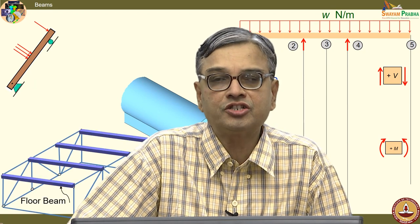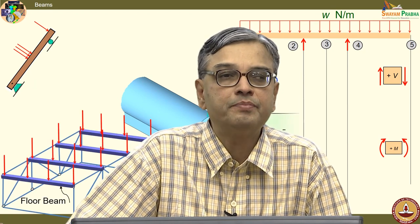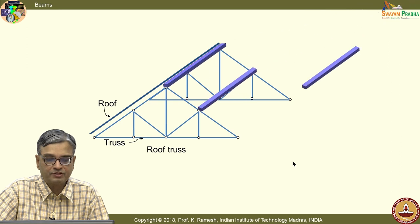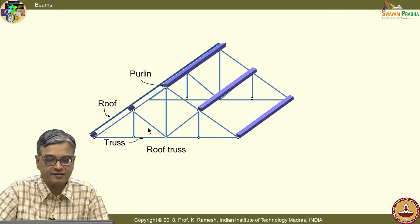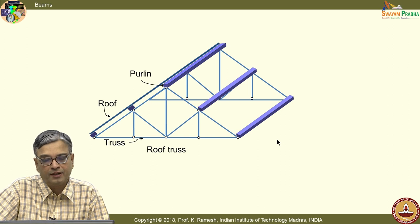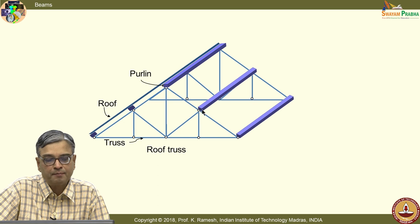Let us move on to our next chapter on beams. We have already seen this animation in the context of trusses. Now we will refocus our attention on beams. The first striking feature is that the cross-sectional dimensions are much smaller than the length of the member.